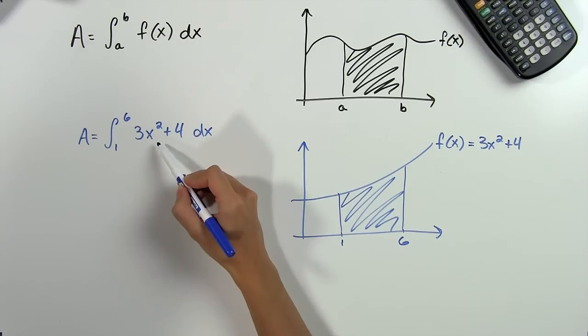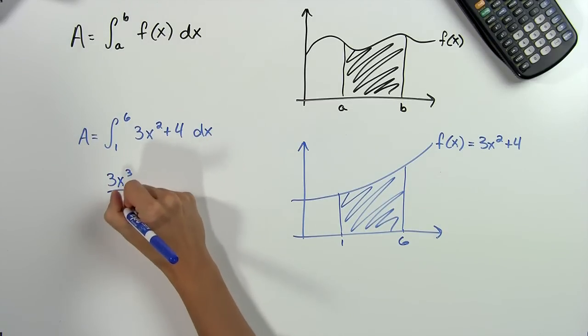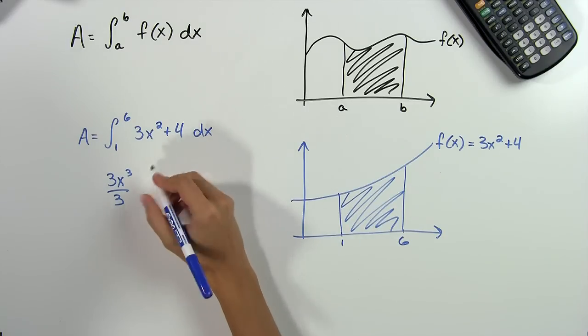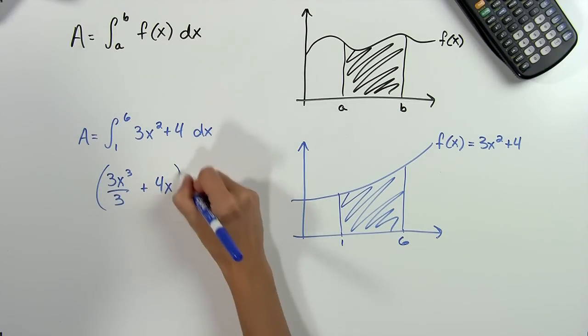The first term, 3x squared, will give us 3x cubed over 3, and the second term, 4, will just be 4x. And all of this will be evaluated from 1 to 6.